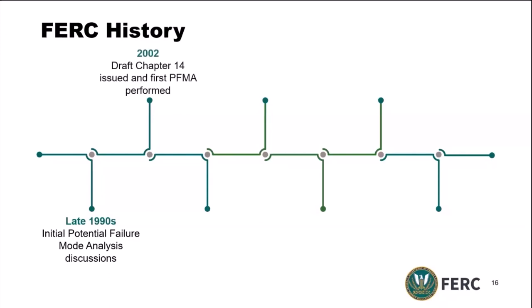In 2002, teams started talking and developing the very first edition of Chapter 14 of our engineering guidelines, which included identification of potential failure mode analysis — what does that look like and what will implementation look like? Later that year in 2002, the very first PFMA was performed. Brown Butte Dam in Oregon was the very first PFMA performed in the FERC inventory.